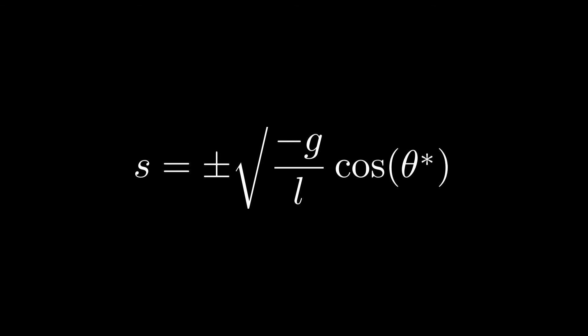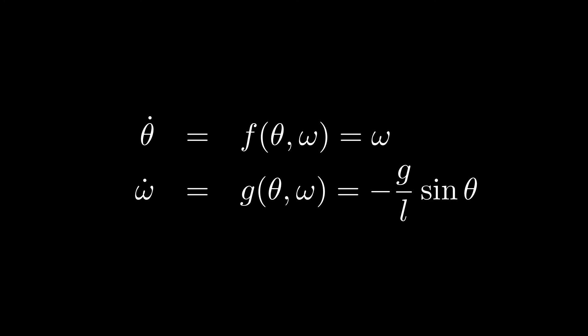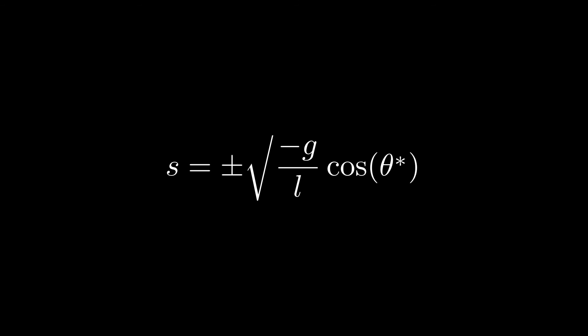We now simply need to evaluate this equation at the fixed points of this dynamical system. From looking back at the dynamical system, we can see that these fixed points are omega equals zero from the first equation, and any multiple of pi from the second equation. This gives us two cases.